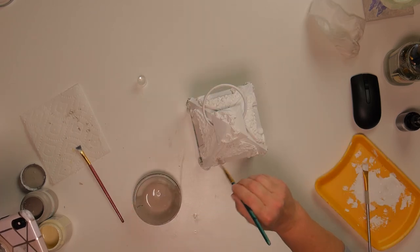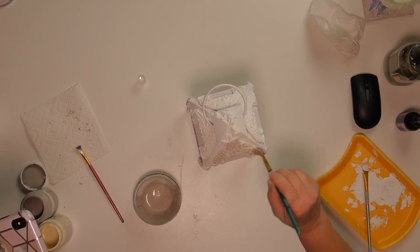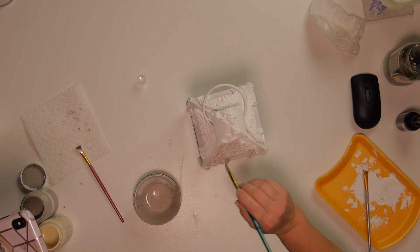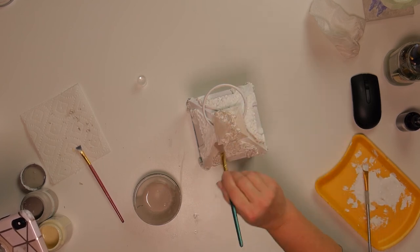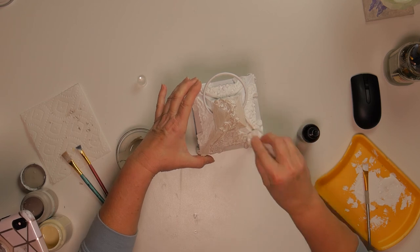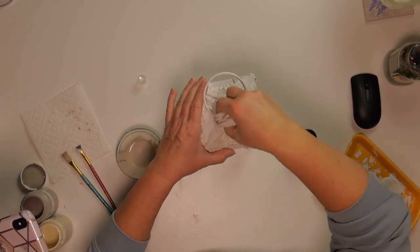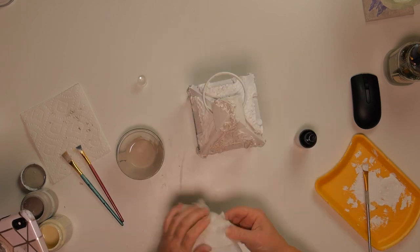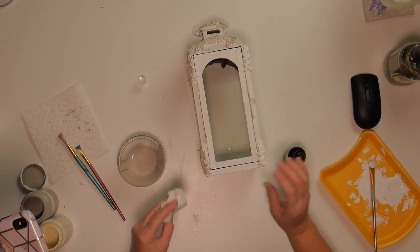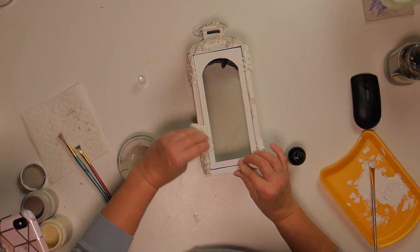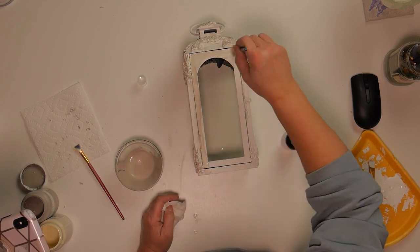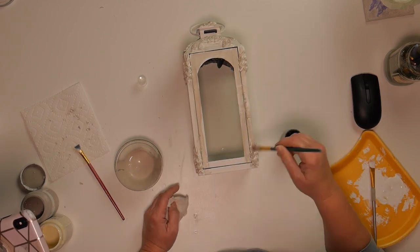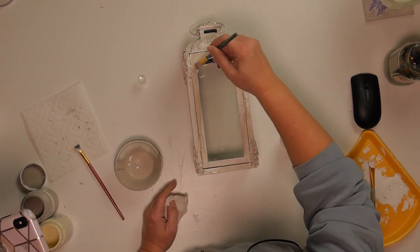So again, I'm going to use the Waverly Chalk Paint in Mineral and I'm going to paint it up and wipe it off. And then for the rest of the piece, I'm going to do the same thing. Just paint it on and wipe it off to give it that antique look.